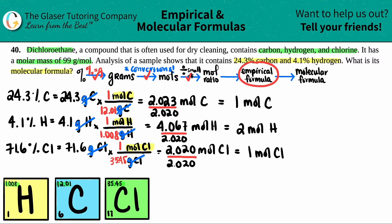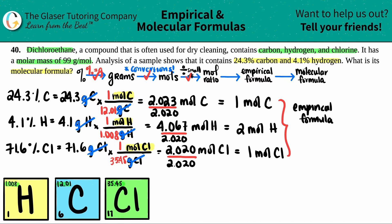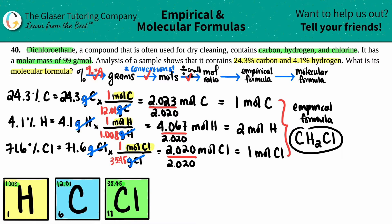The empirical formula is built from the mole ratio. I have 1 carbon — we don't write a subscript of 1, so just C. Then hydrogen with a subscript of 2, giving H₂. Then chlorine with a subscript of 1, giving Cl. So the empirical formula is CH₂Cl.